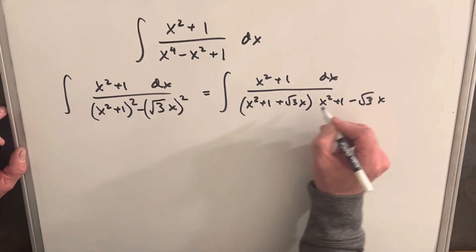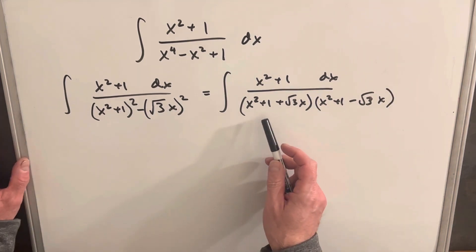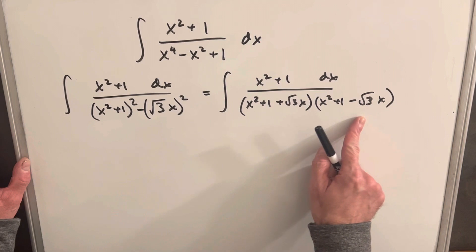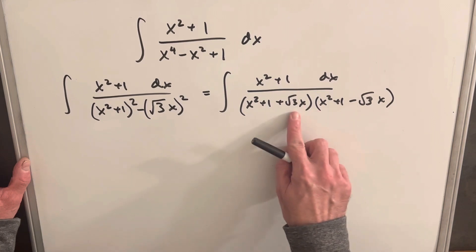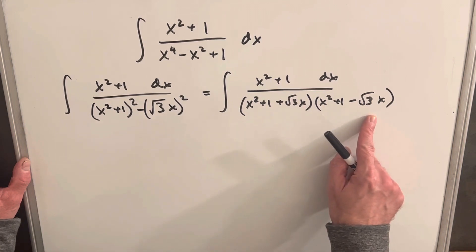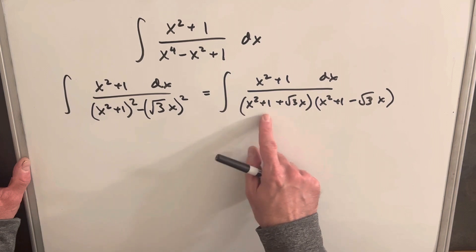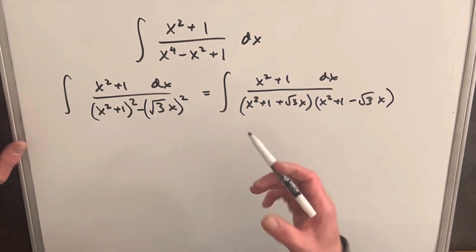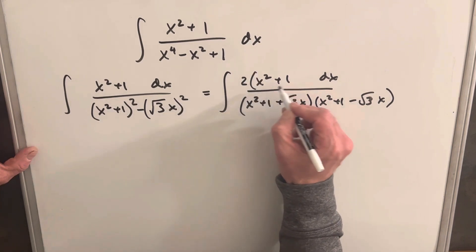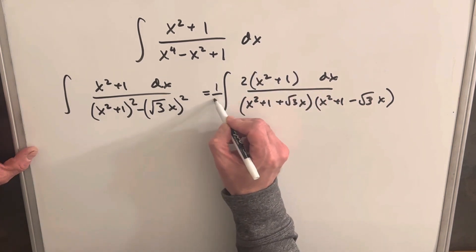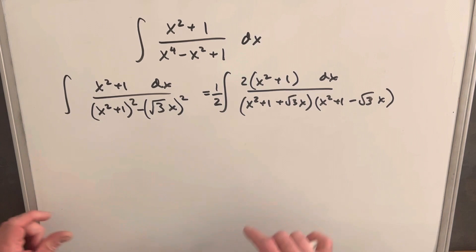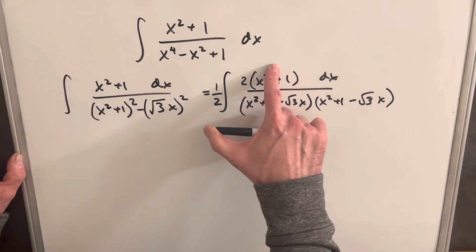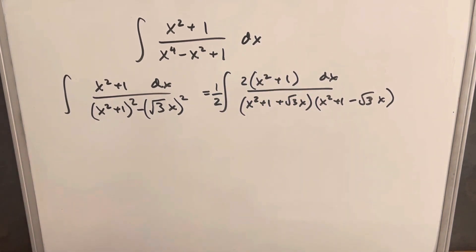And the cool thing here is, just notice, if you were to add these two together, the square root 3x terms would cancel. So you'd get two copies of x squared plus 1. And that's very similar to what we have here. We can just make this into two copies, multiplying by 2 here, and then multiplying by a half in front. So then that's going to allow us to manipulate our numerator into something kind of like what's in the denominator.